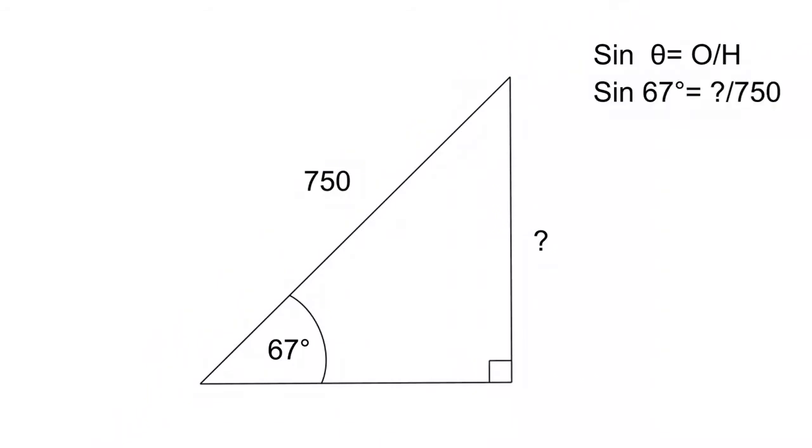The sine of 67 degrees is equal to the unknown over 750. So let's get rid of the sine of 67. Punch sine 67 into your calculator, and then you get 0.92 is equal to the unknown divided by 750, and we can just cross multiply.